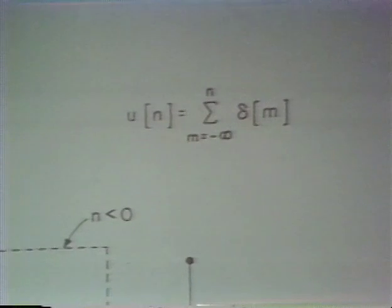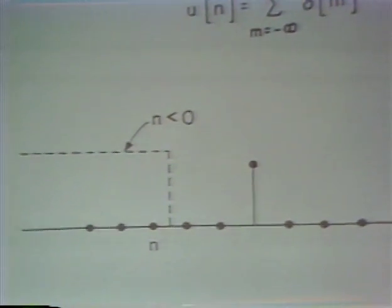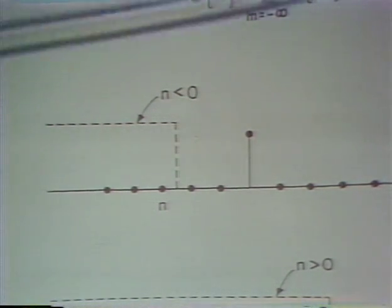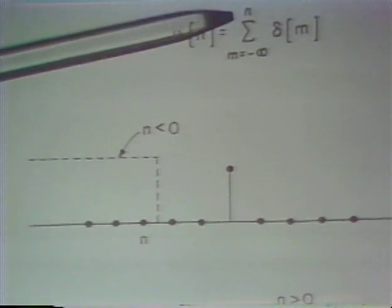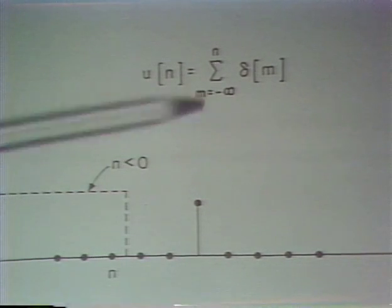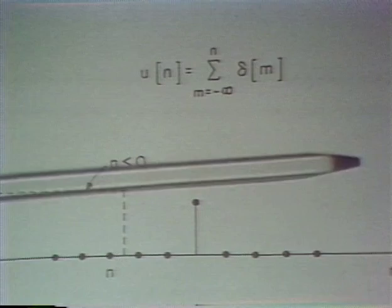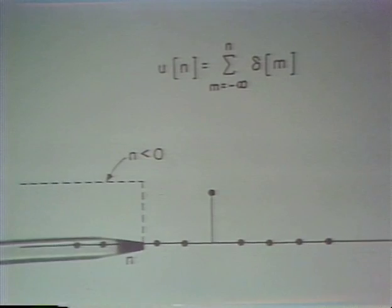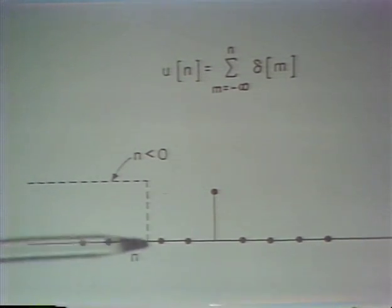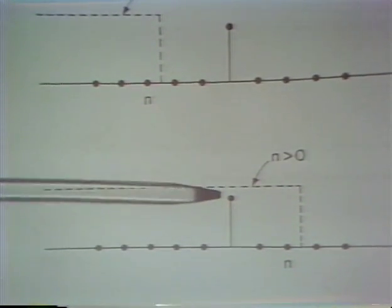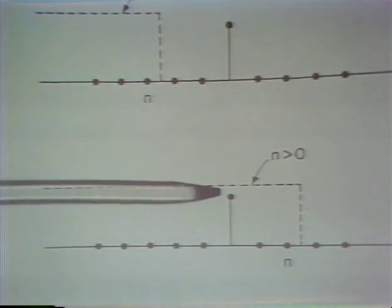We can see that in a fairly straightforward way by simply observing that in this expression, when n is less than 0, there's nothing accumulated in the sum, as shown graphically. For n less than 0, we accumulate no terms in the sum. Whereas for n greater than or equal to 0, we accumulate one non-zero value in the sum, namely the value of the unit sample at n equals 0.